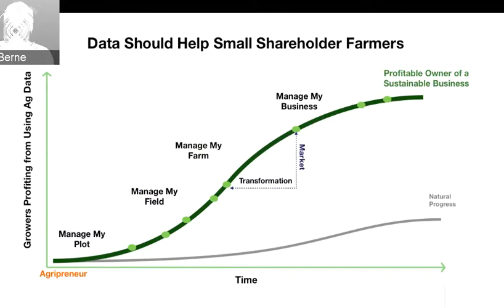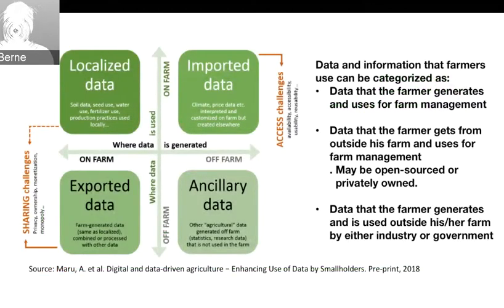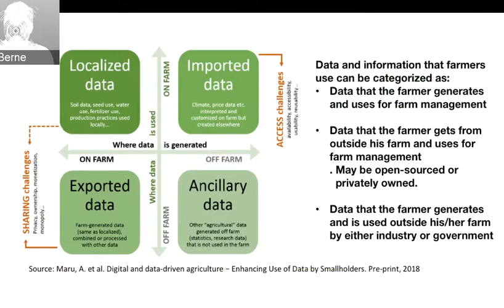Data can be divided up into chunks — otherwise it gets really overwhelming. There's data you generate on the farm: what crop you're growing, how much you grew, what inputs you used, how you irrigated, how you seeded. Then there's data you get from outside — soil, terrain, and weather are two big ones from outside, as well as market conditions and crop pricing. And there's data you generate that's used outside your farm by industry or government.